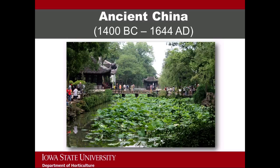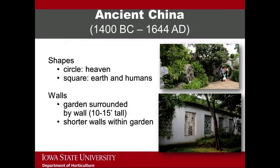It includes a large water feature, rock outcroppings, a raised bridge, and numerous pavilions reflecting Chinese architecture. Chinese gardens have a number of features that make them unique. The first feature is how shapes are used and what they represent.